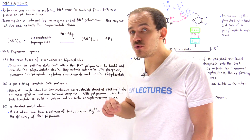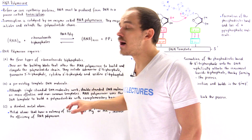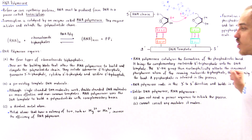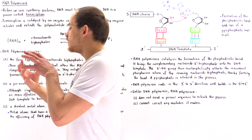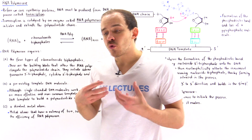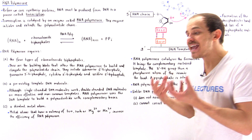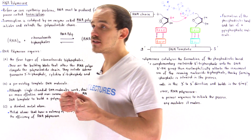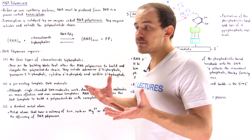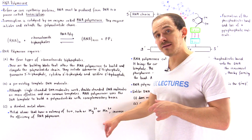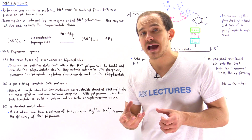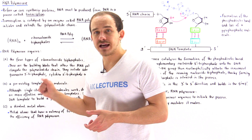RNA polymerase uses this DNA template to build a polynucleotide chain that contains complementary bases. Finally, inside the RNA polymerase molecule at its center, there is a pocket that can fit a divalent metal atom — a metal atom that can gain a positive charge of +2 by losing two electrons. Two types of atoms that work in this case are magnesium (Mg) and manganese (Mn). This metal atom acts as a cofactor and increases the efficiency of the enzyme's activity.